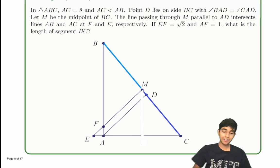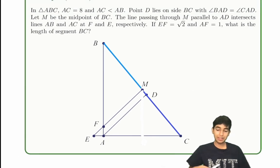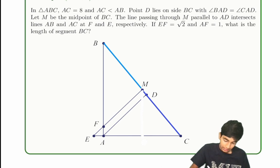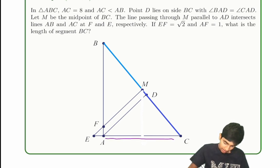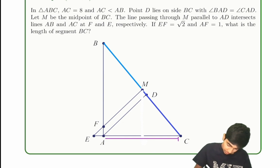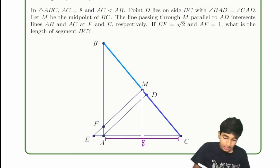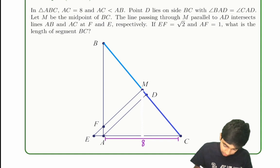Let's now solve this very interesting similar triangles problem. In triangle ABC, we're given AC is 8.